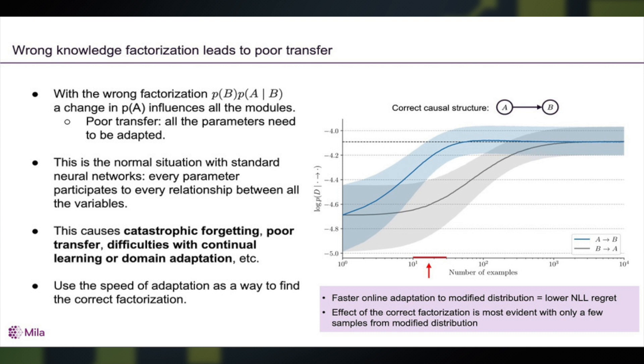We think that having an inappropriate factorization of knowledge leads to problems like catastrophic forgetting, poor transfer, and so on. And that we can use the speed of adaptation as a clue to find a better way to factorize knowledge.